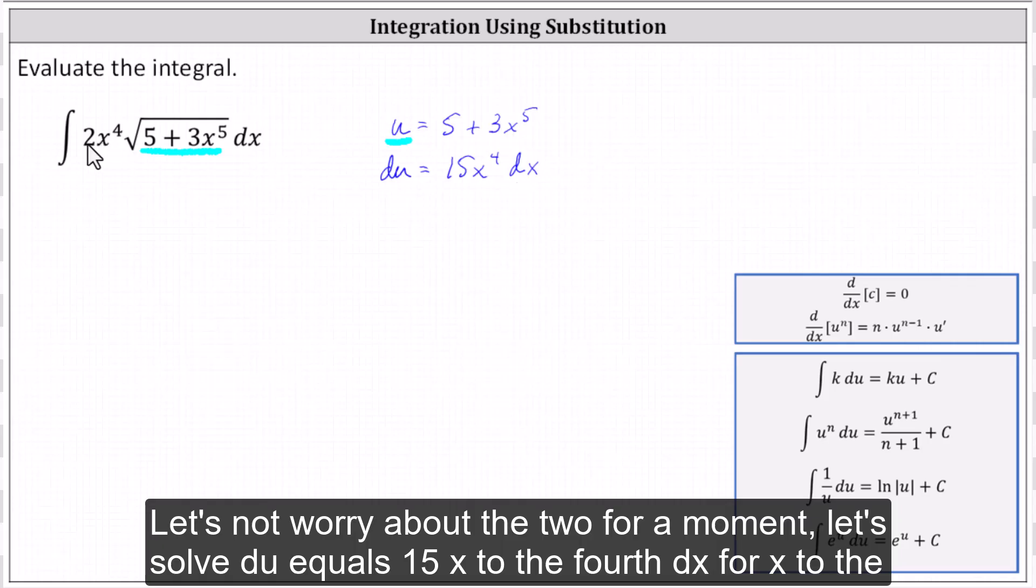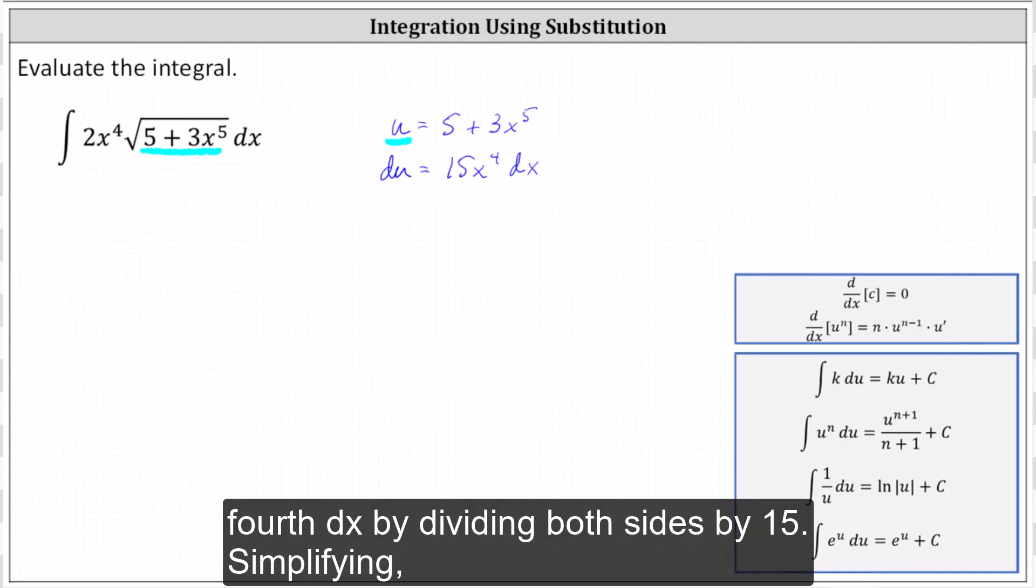Let's not worry about the two for a moment. Let's solve du equals 15x^4 dx for x^4 dx by dividing both sides by 15.